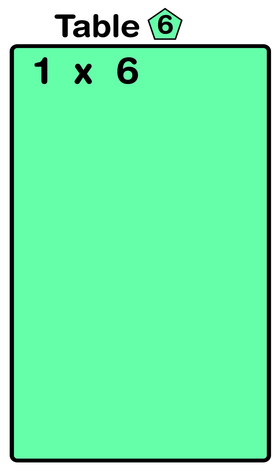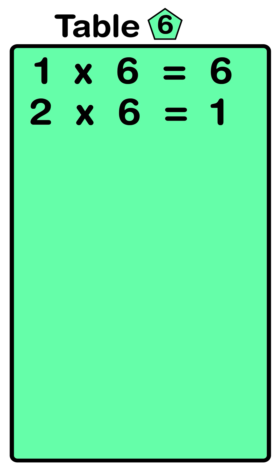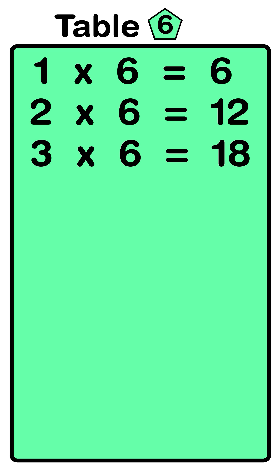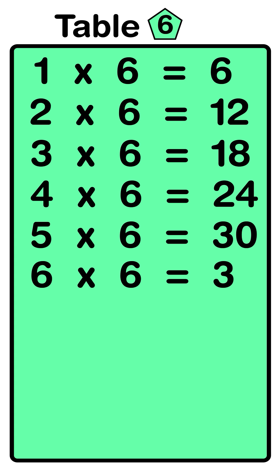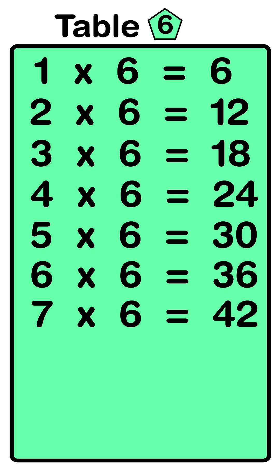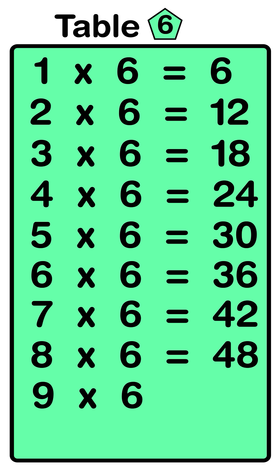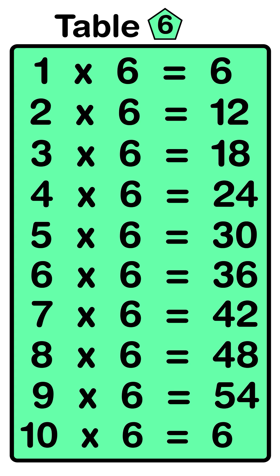One six's are six, two six's are twelve, three six's are eighteen, four six's are twenty-four, five six's are thirty, six six's are thirty-six, seven six's are forty-two, eight six's are forty-eight, nine six's are fifty-four, ten six's are sixty.